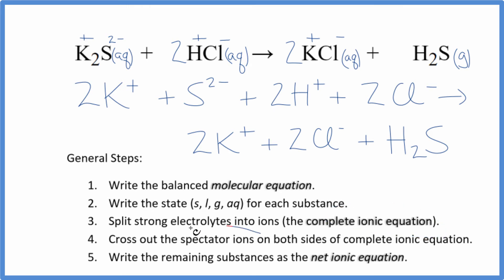Now we can cross out those spectator ions. They're on both sides. So I look here, I see two potassium ions in the reactants and in the products. Cross those out. Two chloride ions here in the reactants and in the products. Let's cross those out.